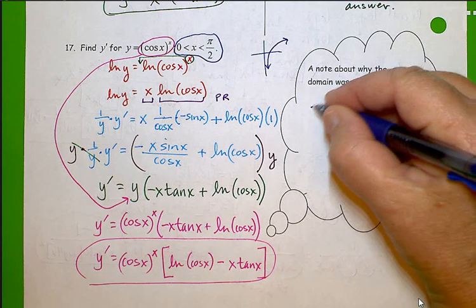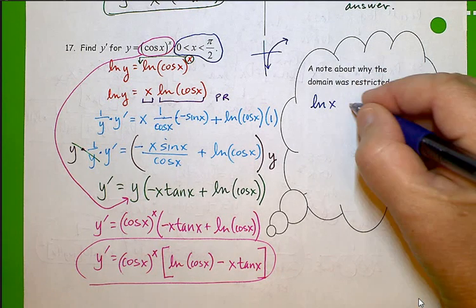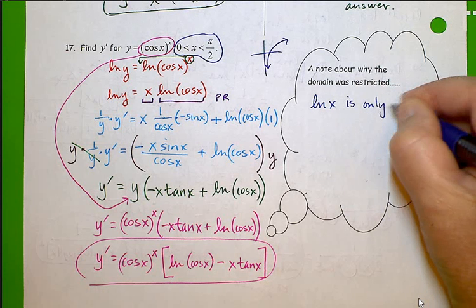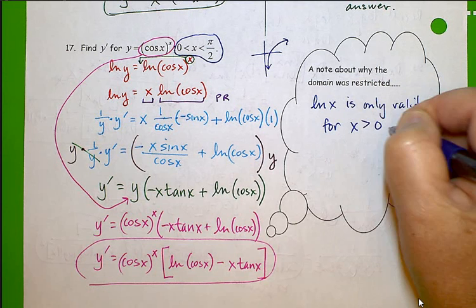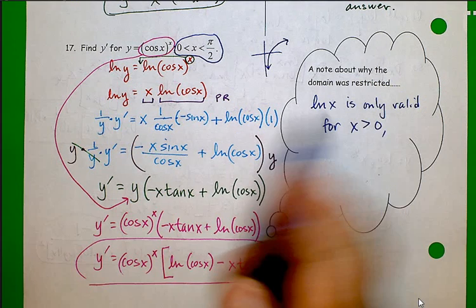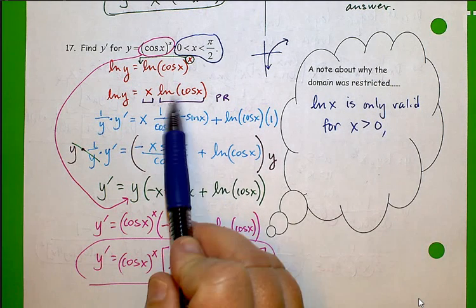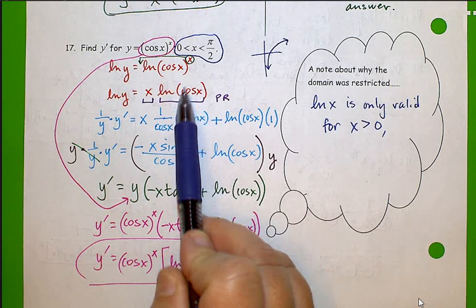Natural log of x is only valid for x greater than zero. So because of that, since we're taking the natural log of cosine of x, we have to make sure that cosine of x is restricted to x values greater than zero.